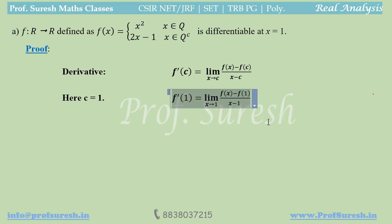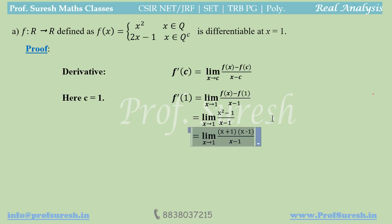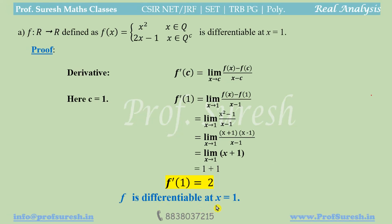Substituting c = 1: f'(1) = limit as x tends to 1 of f(x) minus f(1) divided by x minus 1. Since x is rational, f(x) = x² and f(1) = 1² = 1. So the limit becomes (x² − 1)/(x − 1). Using the identity a² − b² = (a+b)(a−b), we get (x−1)(x+1)/(x−1). Cancelling (x−1), we get x+1. Substituting x = 1 gives 1 + 1 = 2. So f'(1) = 2 and f is differentiable at x = 1.